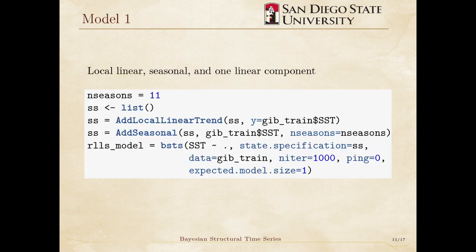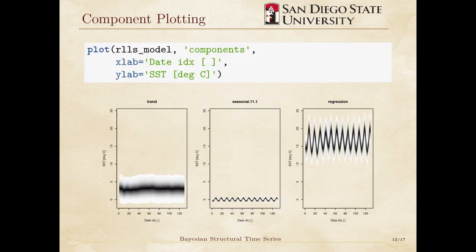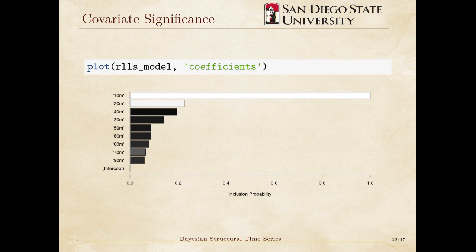The following code fits a local linear seasonal and one linear component model. The ping parameter sets a print statement while the function is running — we set it to zero. Expected model size sets our spike and slab prior to have one spike. In other words, we are expecting one depth to heavily influence sea surface temperature, most likely the layer directly underneath. A regression component is now plotted alongside our other components. We plot our coefficients to see which depths are significant. As I thought, the 10 to 20 meter depth has a positive coefficient and a high inclusion probability. White bars represent positive betas, and black bars represent negative betas.